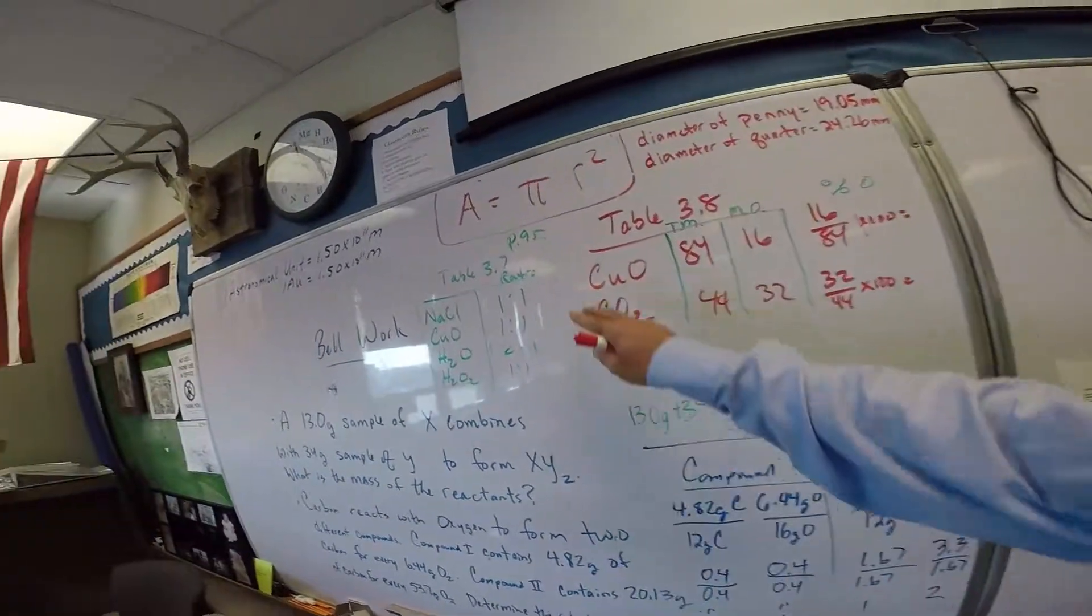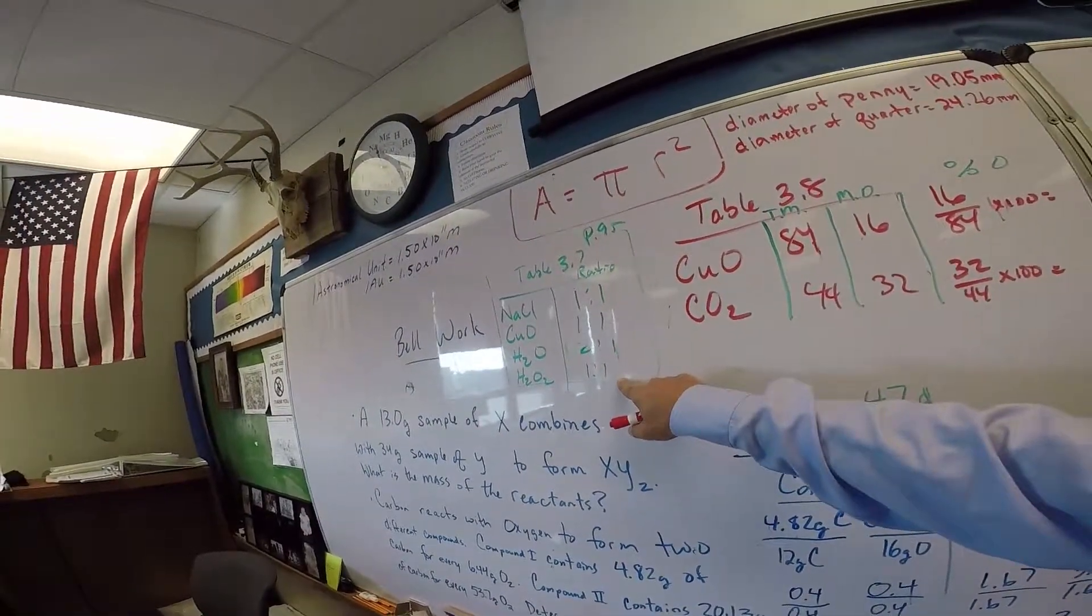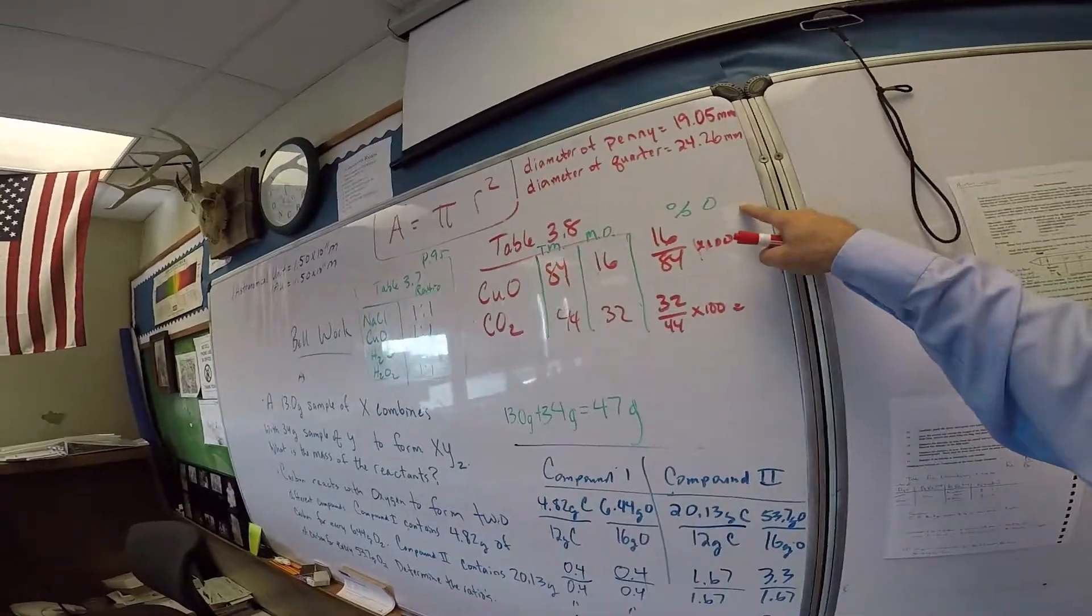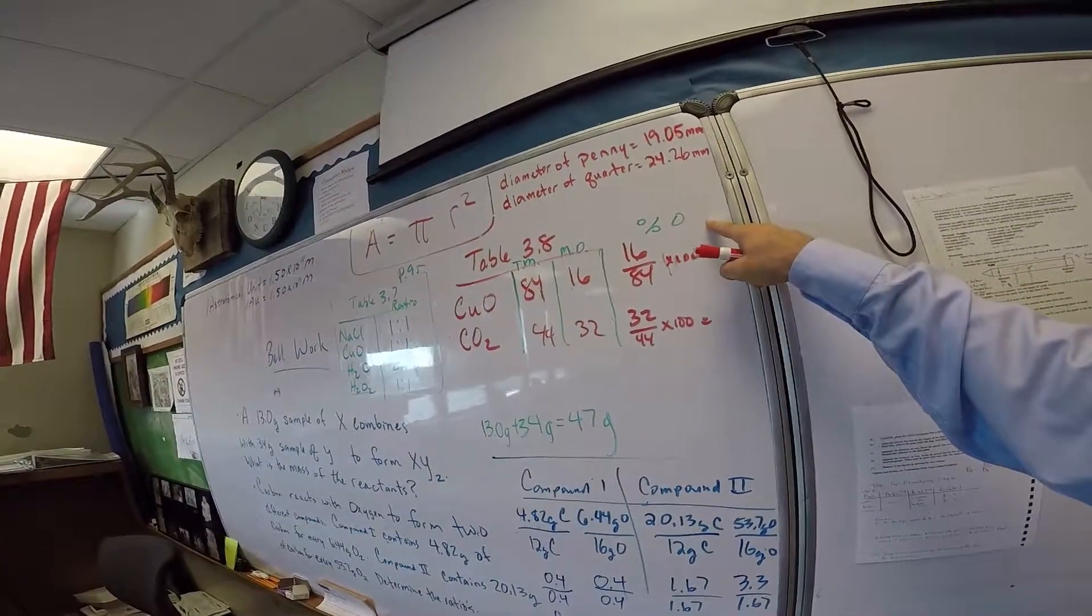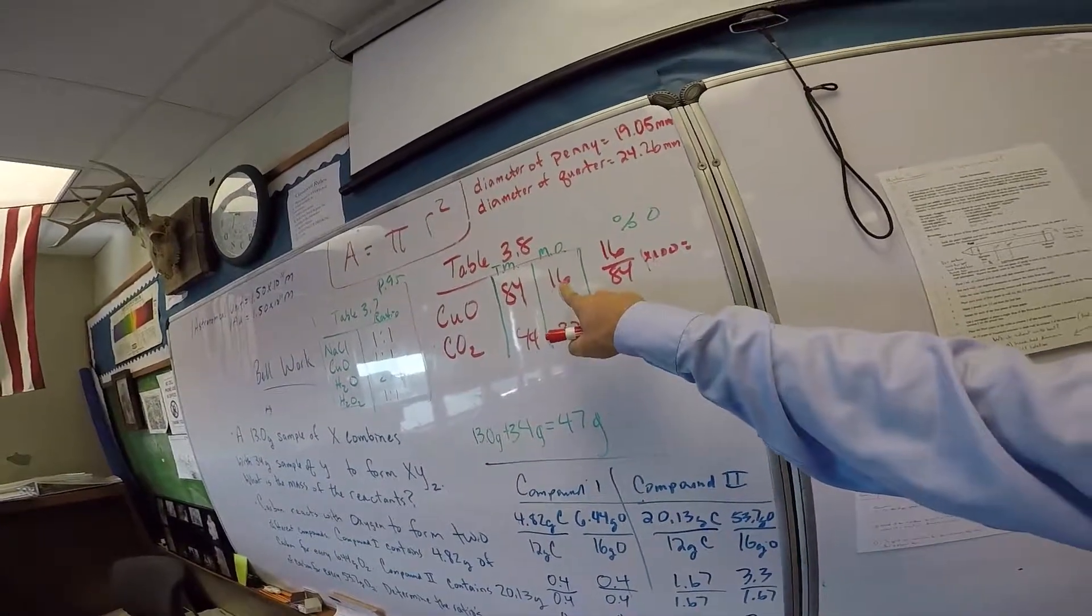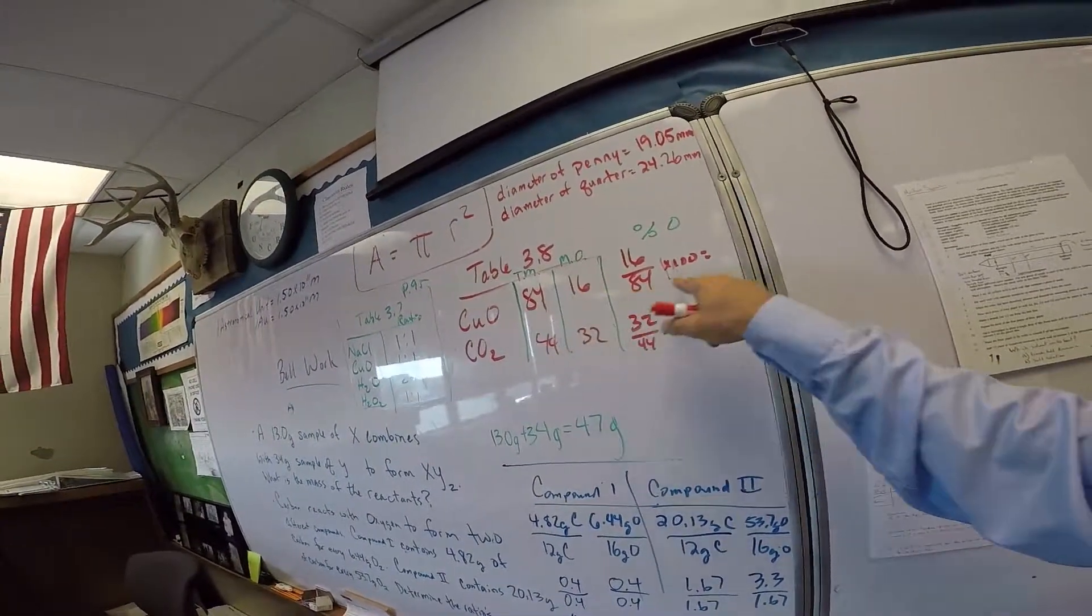Alright, so we completed table 9.5 in the book, where we have our ratios. Table 3.8, they're just asking to find the percents of the substance. Typically, you have a total mass, and then you find out the mass of the oxygen, determine the percents.